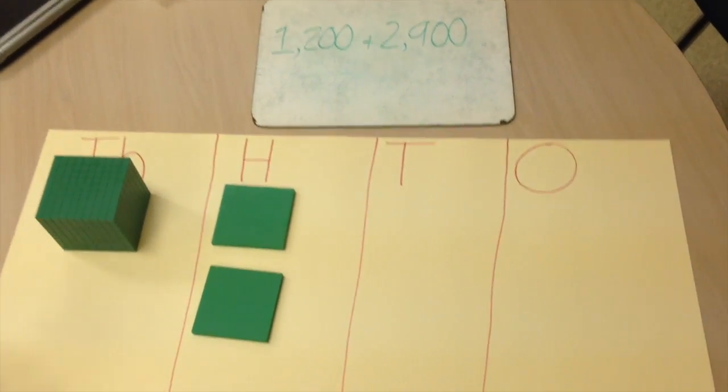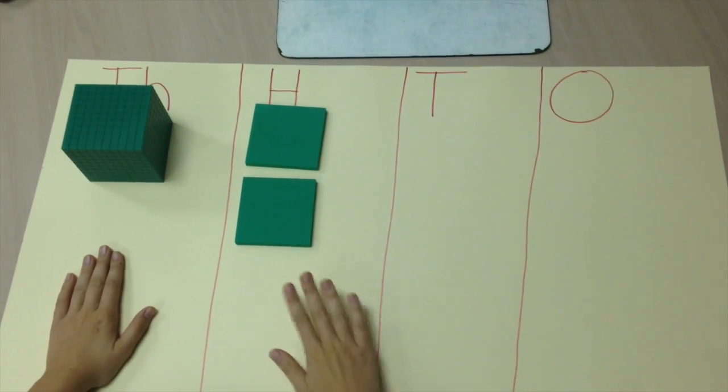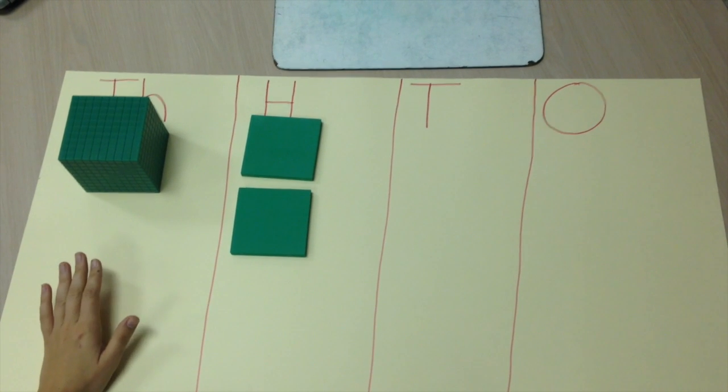On my place value mat, I've set up 1,200. To the number 1,200, I'm now going to add 2,900.